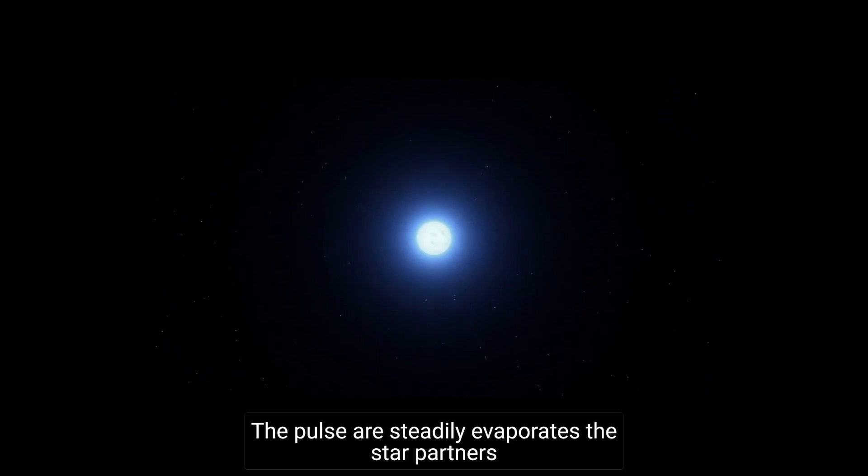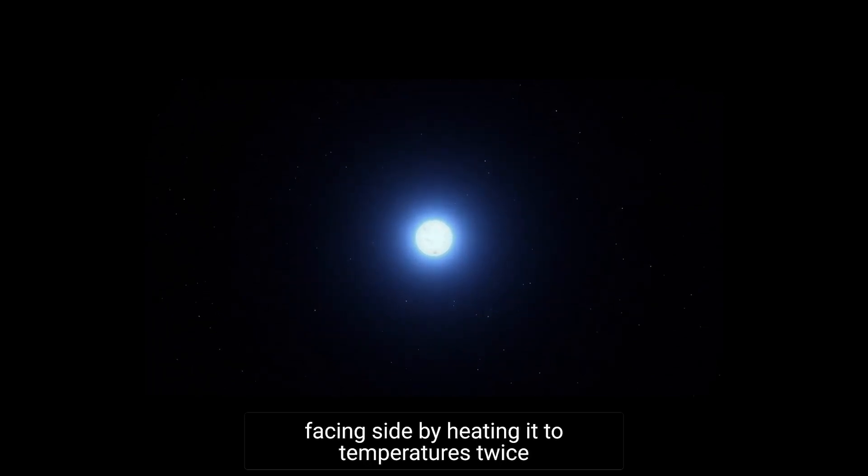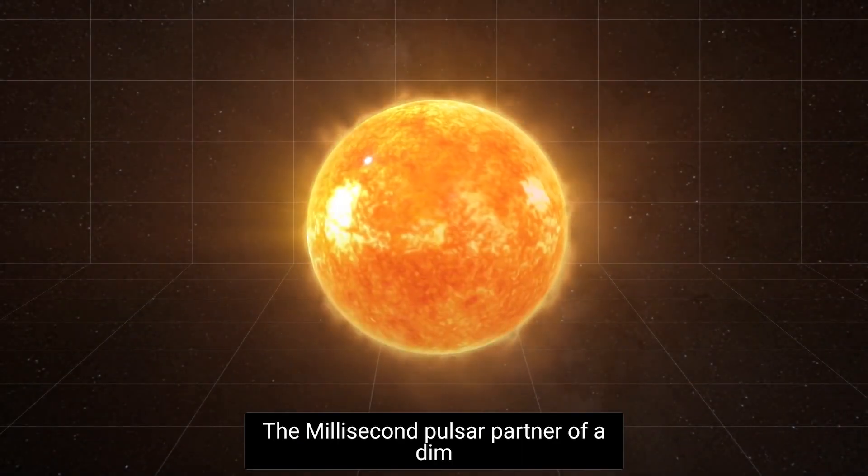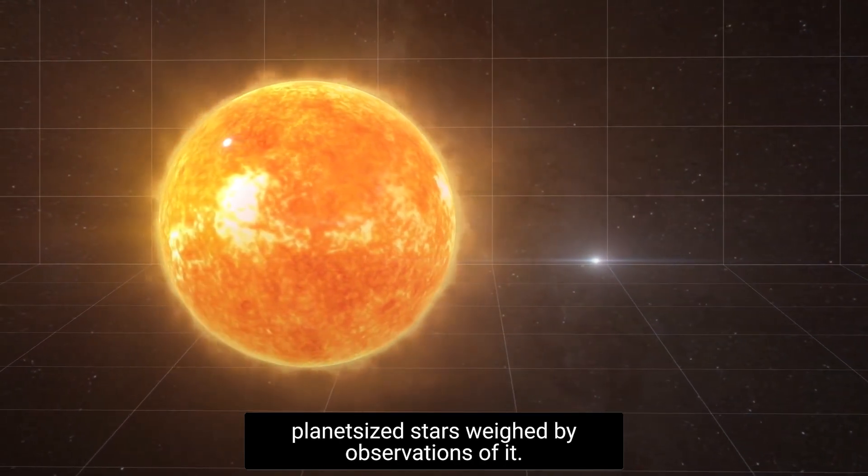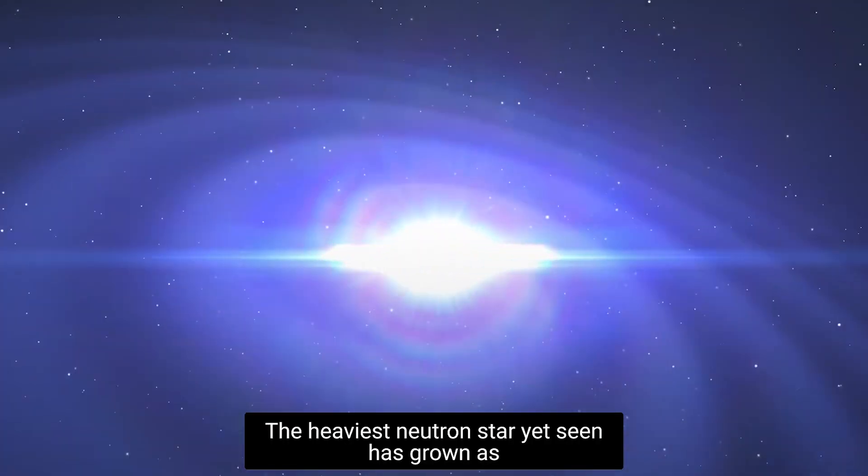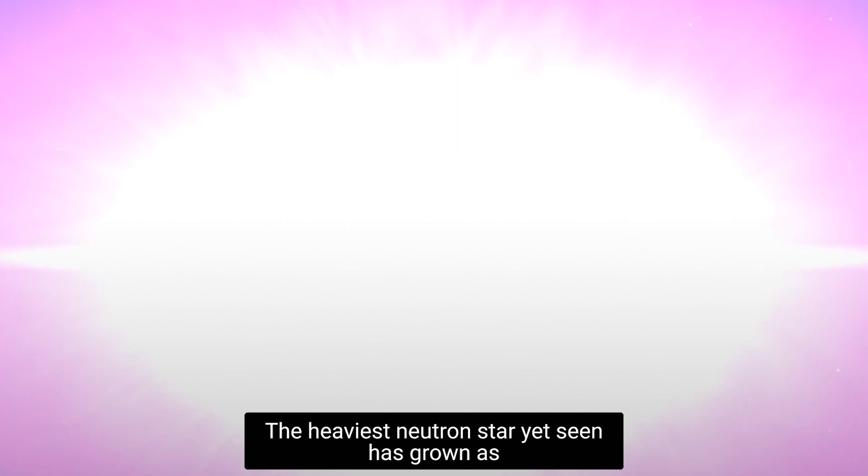The pulsar steadily evaporates the star partner's facing side by heating it to temperatures twice as hot as the surface of the Sun. The millisecond pulsar partner of a dim, planet-sized star is weighed by observations of it.